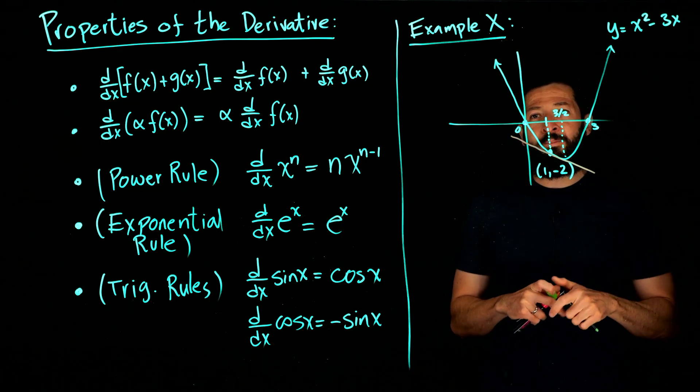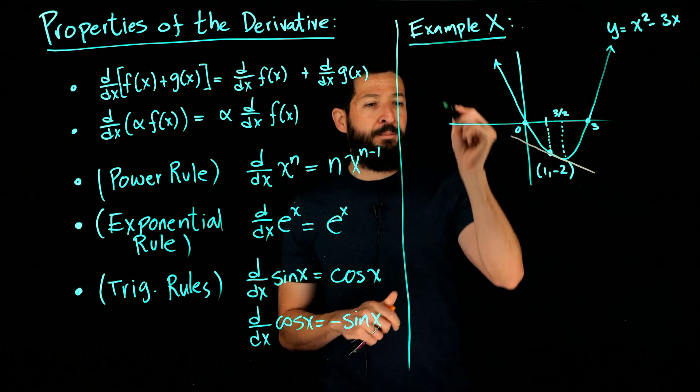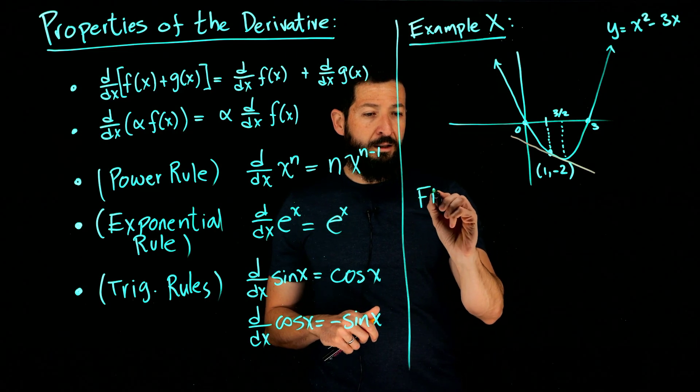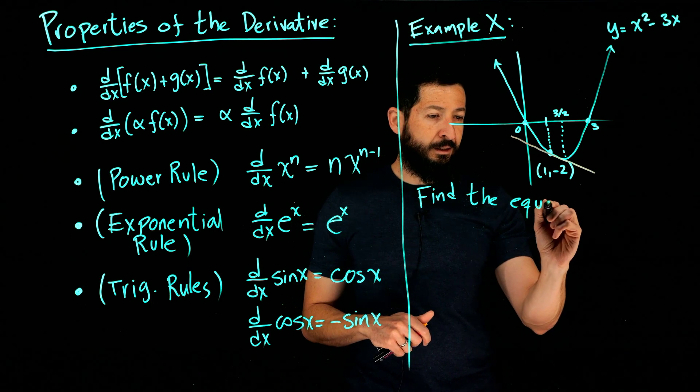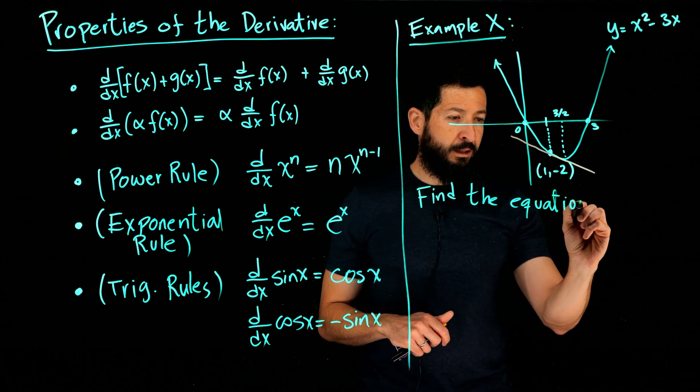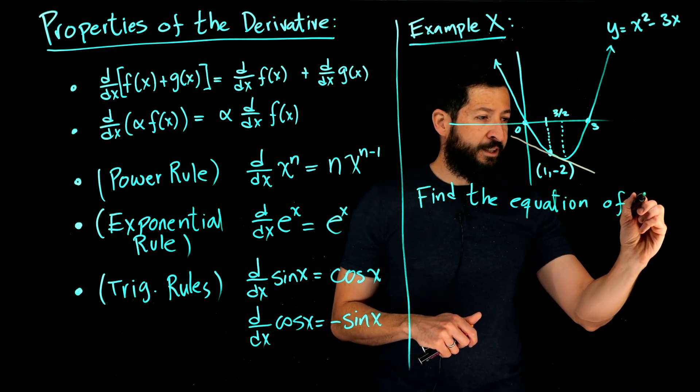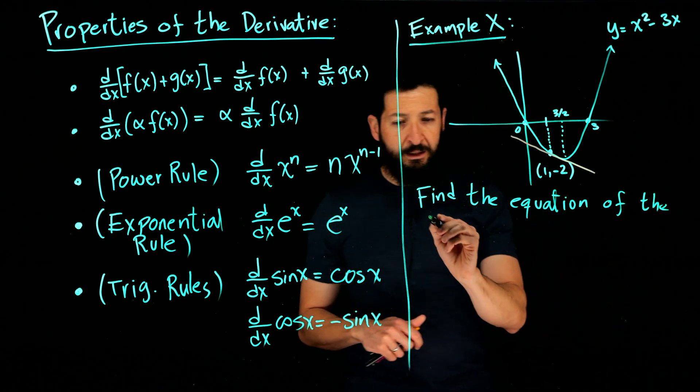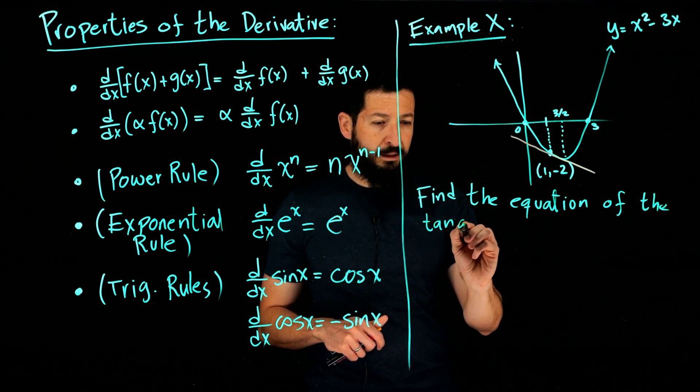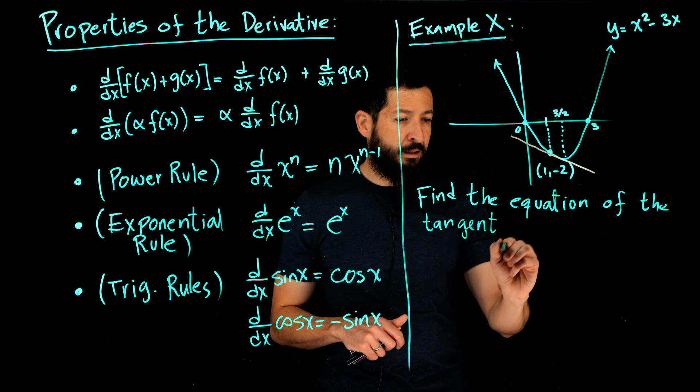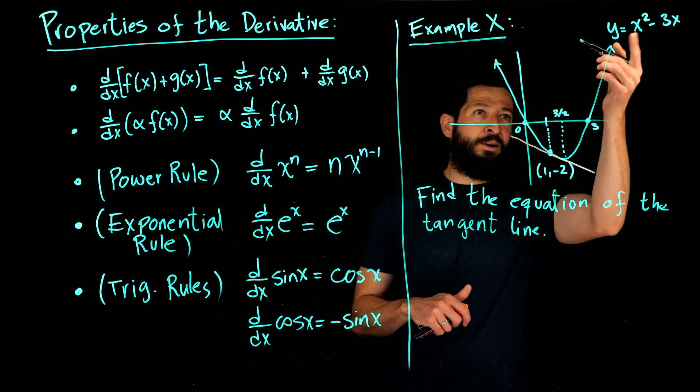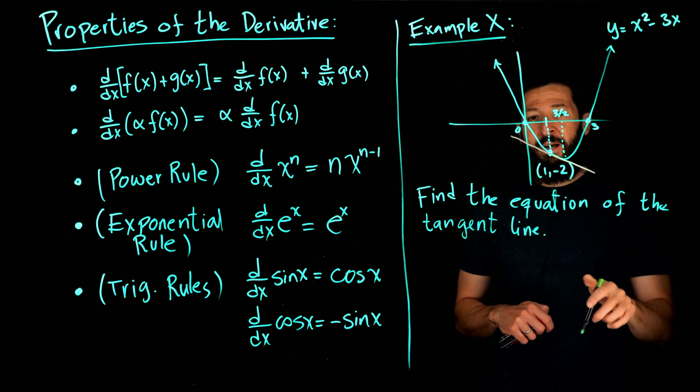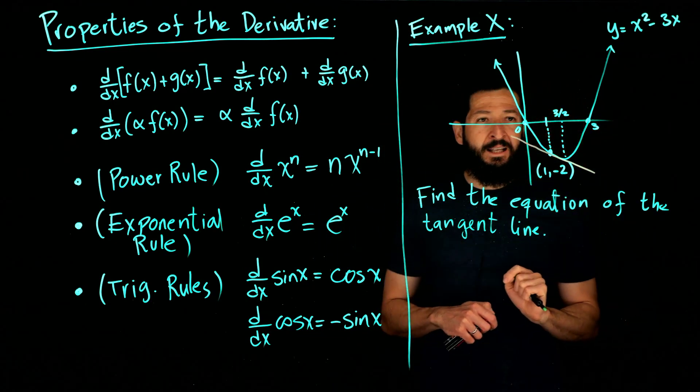And we're going to look at what is the slope of the tangent line to the graph of y equals x squared minus 3x at the point one comma negative two. So find the equation of the tangent line to the graph of x squared minus 3x at one, negative two.